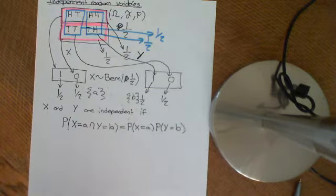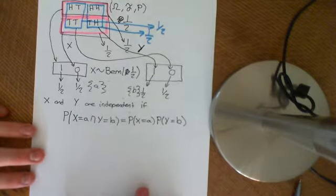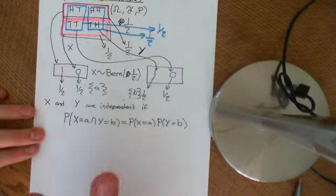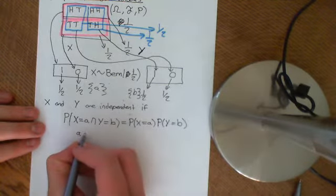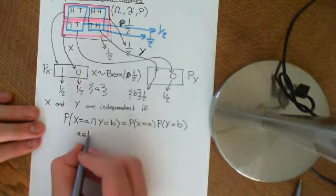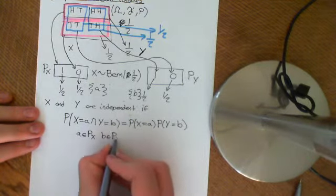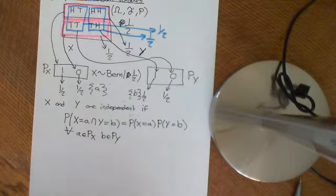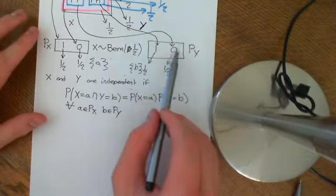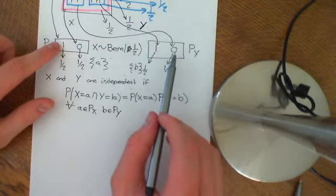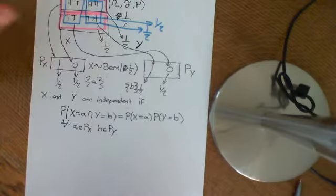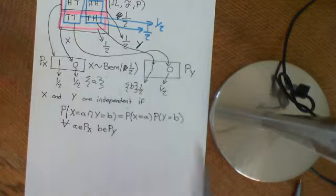That's what it means for two random variables to be independent. This is the definition that the event X equals A is independent from the event Y equals B. For the two random variables to be independent, it needs to hold for all A in the probability space of X — call it P_X — and all B in the probability space of Y — call it P_Y. So for all A in P_X and B in P_Y, the probability of the intersection must equal the product of the individual probabilities.